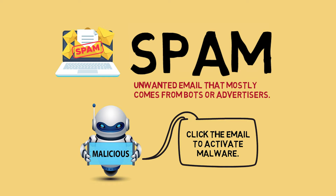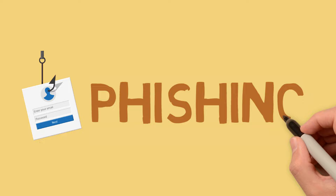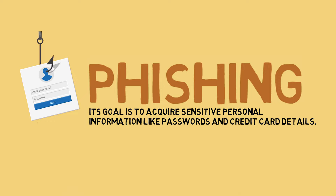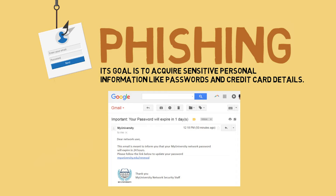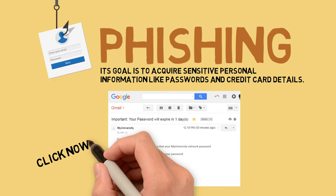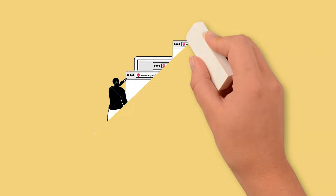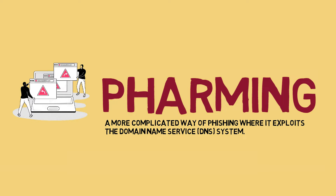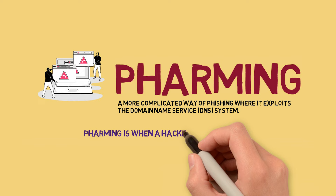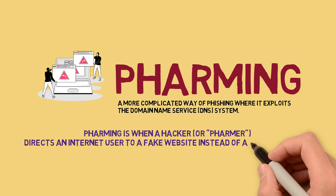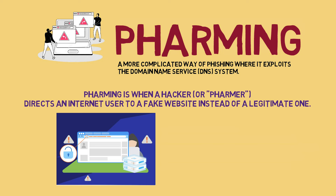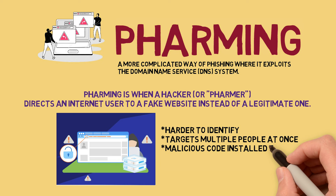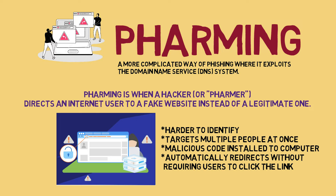The last internet threat is phishing. Its goal is to acquire sensitive personal information like passwords and credit card details. This is done by sending you an email that will direct the user to visit a website and be asked to update his or her username, password, credit card, or personal information. There is also what we call pharming, which is a more complicated way of phishing wherein it exploits the domain name service or the DNS system. Pharming is when a hacker directs an internet user to a fake website instead of a legitimate one. These spoofed sites can capture a victim's confidential information including usernames, passwords, and credit card data, or install malware on their computer.